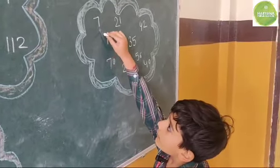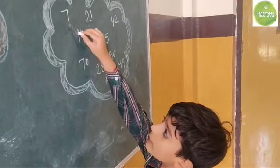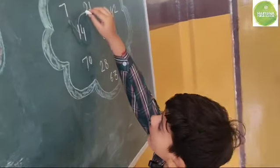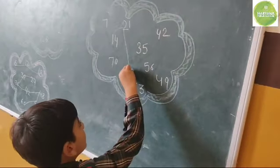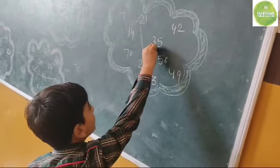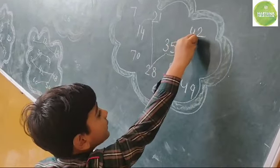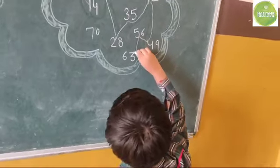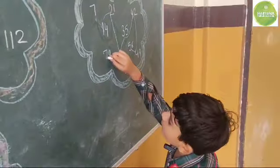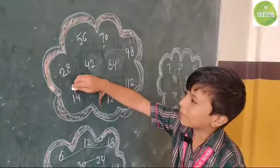7 times 1 is 7, 7 times 2 is 14, 7 times 3 is 21, 7 times 4 is 28, 7 times 5 is 35, 7 times 6 is 42, 7 times 7 is 49, 7 times 8 is 56, 7 times 9 is 63, 7 times 10 is 70.